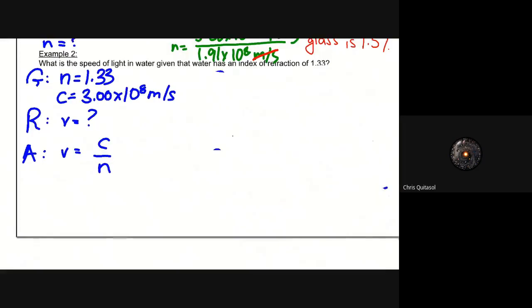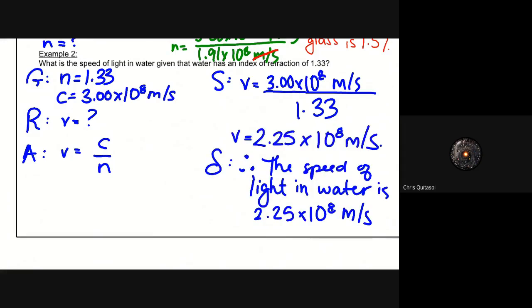So like I said, in this example, we're trying to solve for the speed of light in water, given that water has an index of refraction of 1.33. So our solution component to solve for velocity, we divide the speed of light as a constant by that index of refraction. And it gives us the value 2.25 times 10 to the exponent of 8 meters per second. So the speed of light in water is 2.25 times 10 to the 8 meters per second.